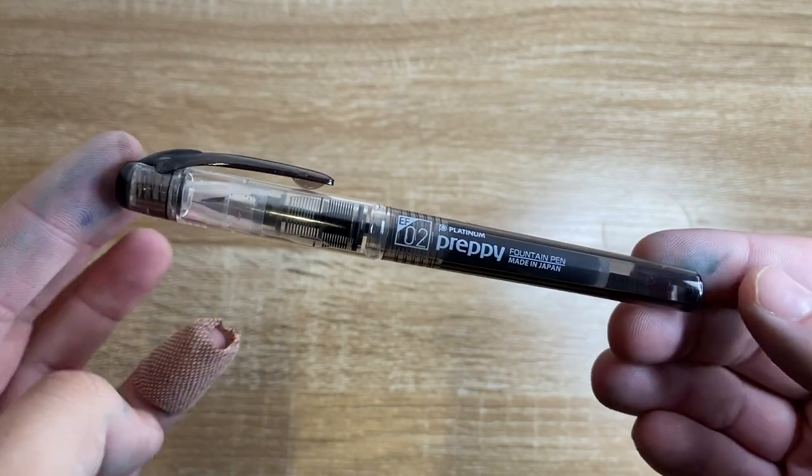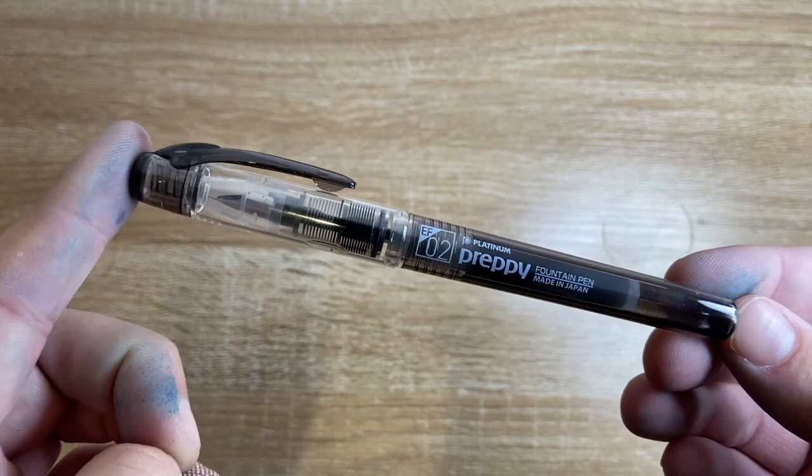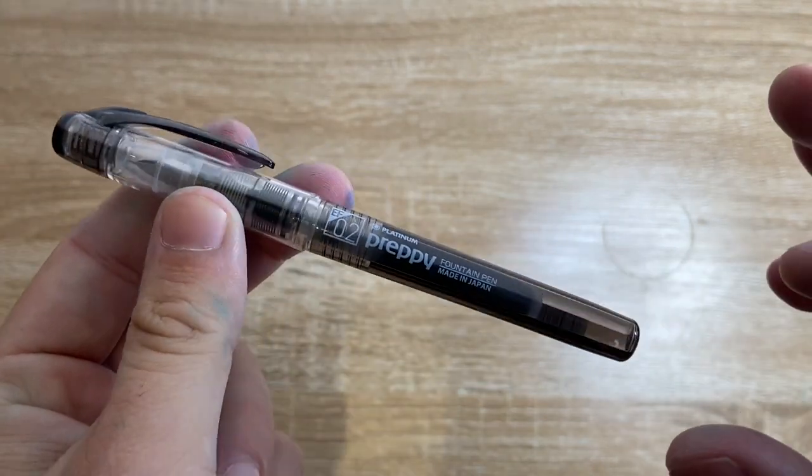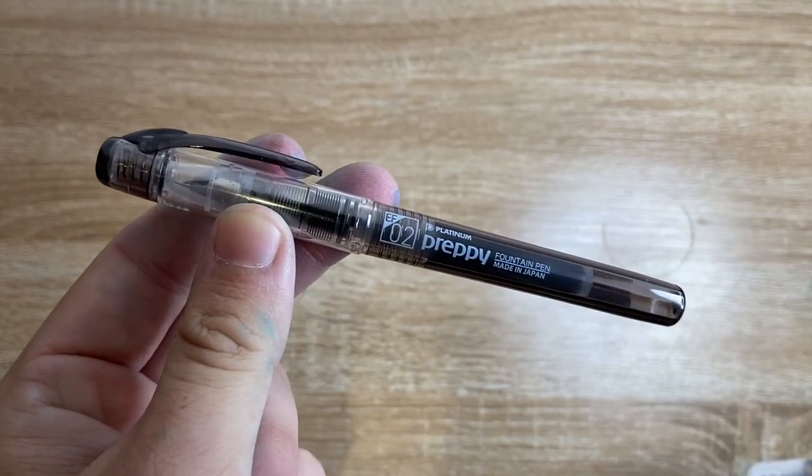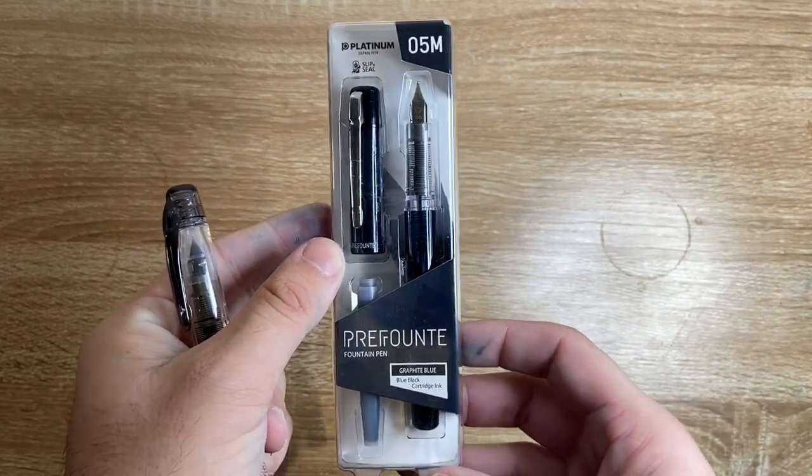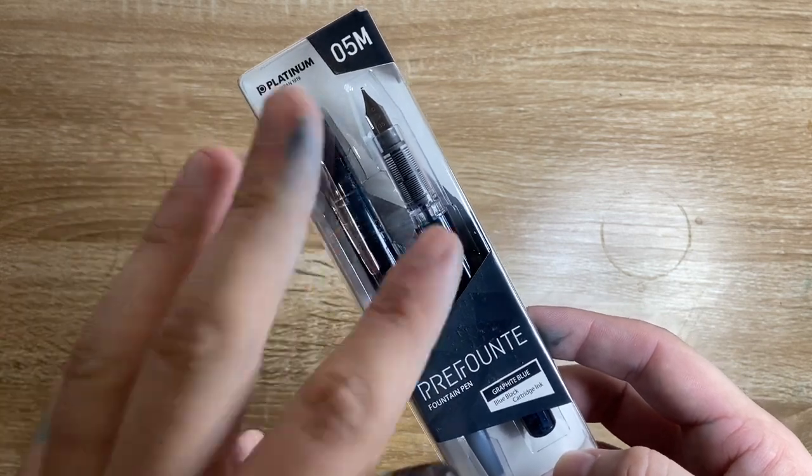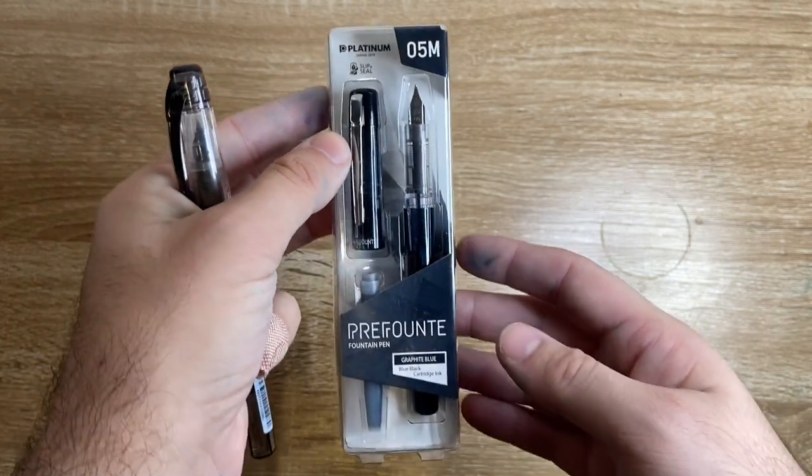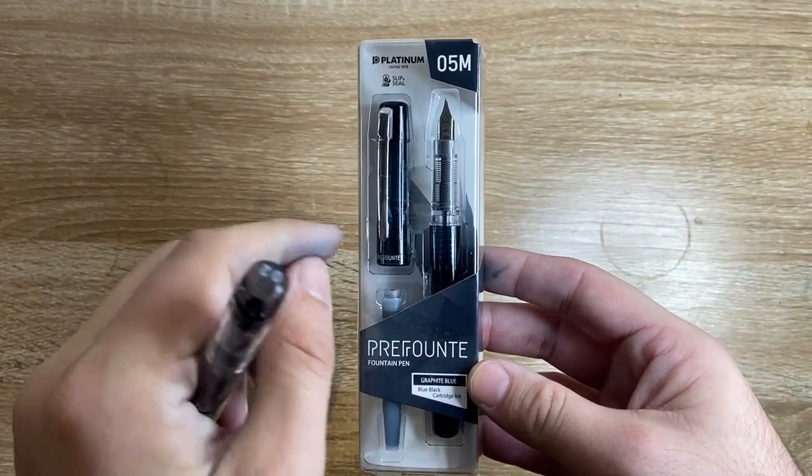But it is a fairly basic disposable design. In the last couple of months, Platinum have come out with something that is an upgrade from this pen, and that is the Platinum Prefonte. This is still basically the same working mechanism of the Preppy, and I'll show that in more detail, but what they've done is they've created a more grown-up body for the pen.